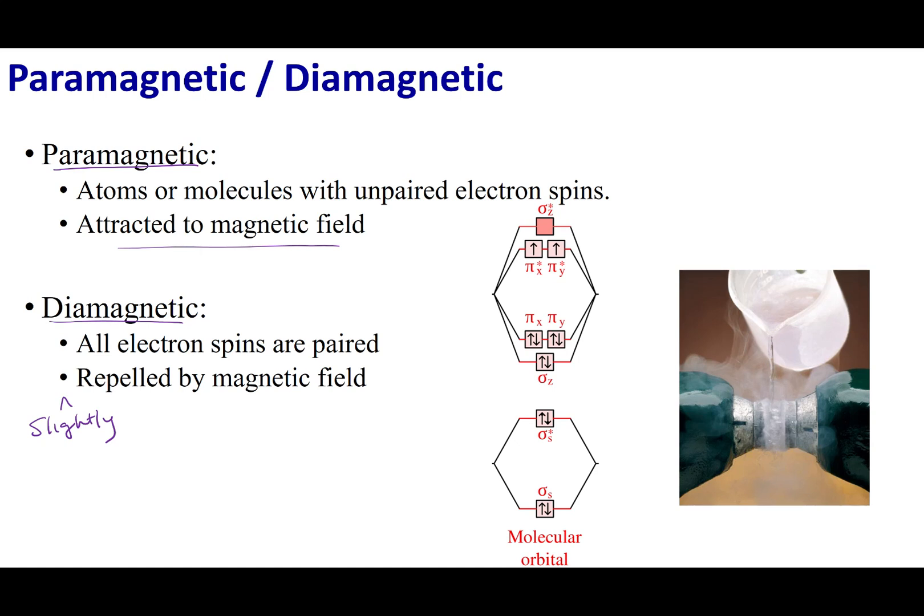So what causes something to be attracted to a magnetic field? Well, it turns out that if you have unpaired electrons, you'll be attracted to a magnetic field. However, if all your electrons are paired up, there's no overall electronic spin, well, that means your compound is going to be diamagnetic.